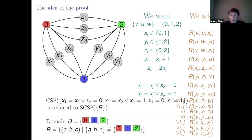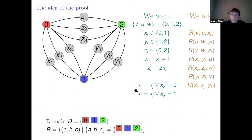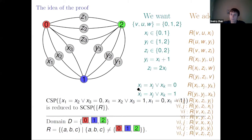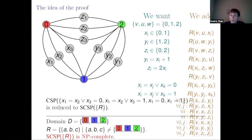The general idea is the same as for the disjunction of equalities: I start with an instance having the property that in any surjective solution, three concrete variables take all values from the domain. That is the main idea, and that is how I prove that this problem is NP-complete.